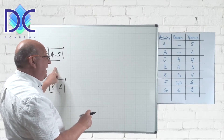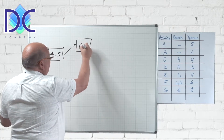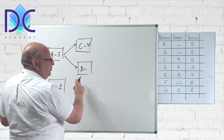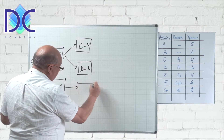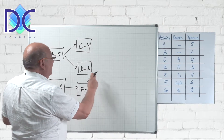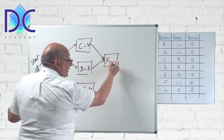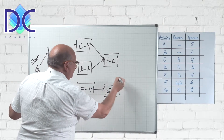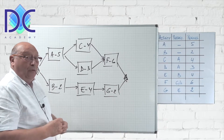Next, C and D come after A: C with a duration of four, D with a duration of three. Then we have E after B with a duration of four. We have F after C and D with a duration of six, and G with a duration of two, followed by the end milestone of the project.